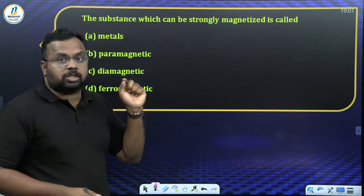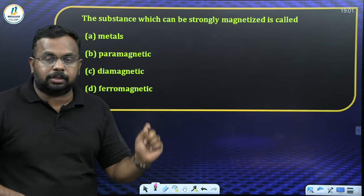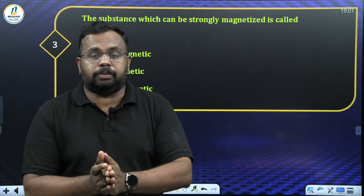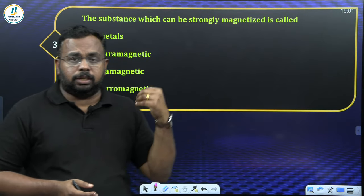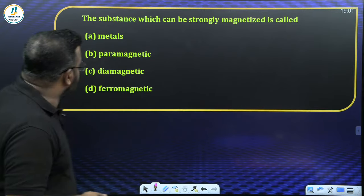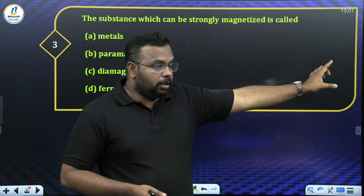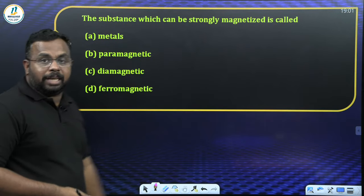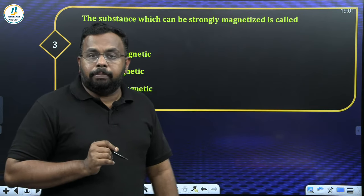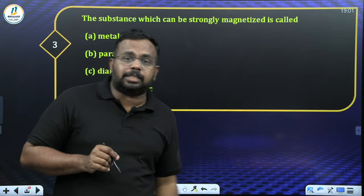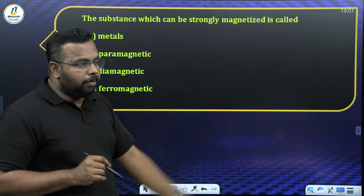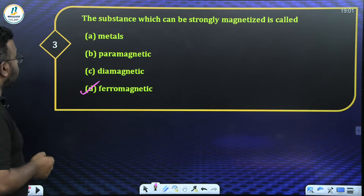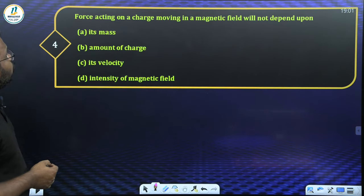Question 3: The substance which can be strongly magnetized — from Magnetism and Matter, classification of magnetic materials. Strongly magnetized is ferromagnetic. Weakly attracted (weakly magnetized) is paramagnetic. Weakly repelled is diamagnetic. So the answer is ferromagnetic.